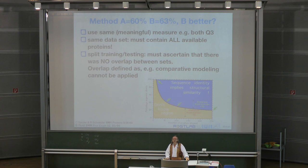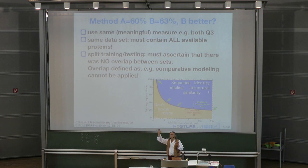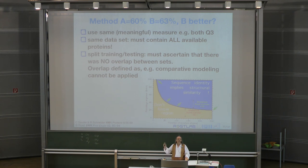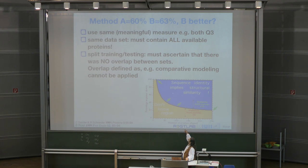Assume that the overlap between training and testing is such that you could do comparative modeling — then you wouldn't apply secondary structure prediction methods. If you could apply comparative modeling between the two, you would look up the entire structure, not just secondary structure. So you need to make sure there is nothing — between testing and training, you're not in that overlap region.